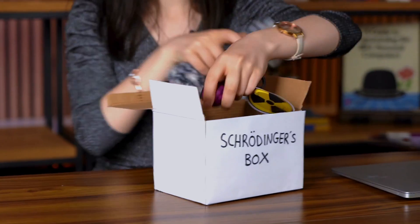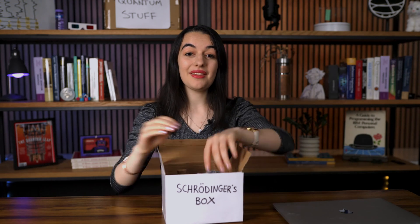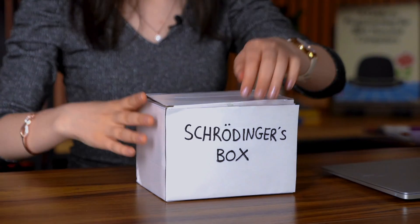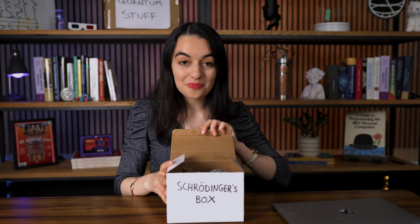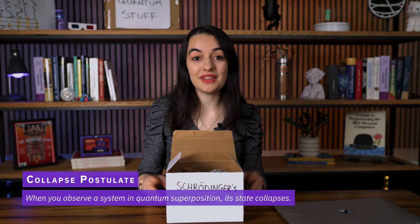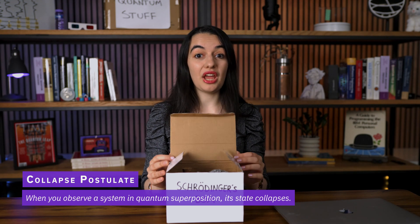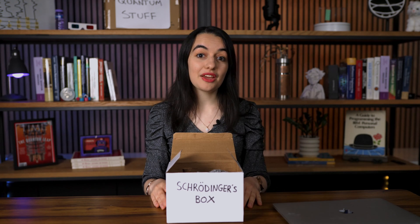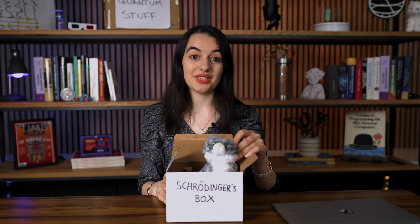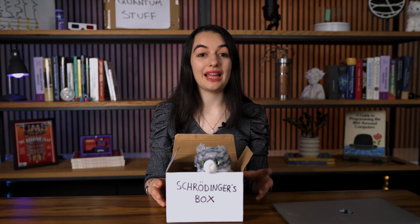It gets interesting if the atom is in a quantum superposition of decaying and not decaying. Then quantum mechanics says that the atom and cat become quantum entangled, so they enter a joint superposition of two states: in one state, the atom has decayed and the cat is dead; in the other, the atom has not decayed and the cat is alive. So inside the box, we now have a cat that is in a superposition of being alive and dead at the same time. What happens if an observer looks inside the box? The collapse postulate of quantum mechanics roughly says that when you observe a system in quantum superposition, its state collapses, so the cat is either alive or dead.